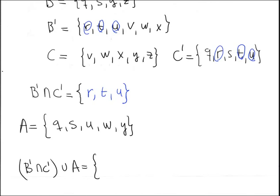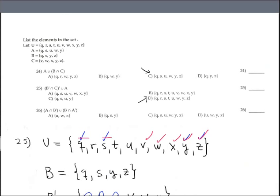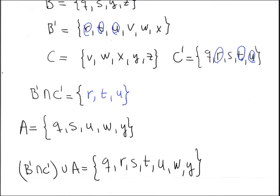Finally, find the union between the intersection result and another set. The union gives us Q, R, S, T, U, W, and Y. This is the answer, though the closest matching option is D. Note that C is not inside our set, so the most correct answer is option D.